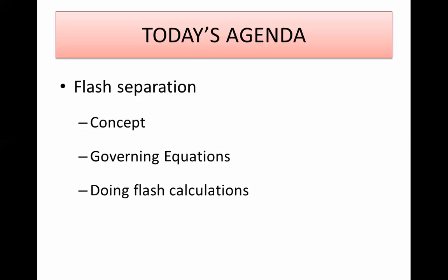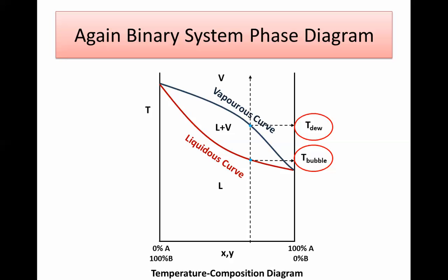Today we'll just discuss the concept and see how it works, and next time we'll see how to do this in Excel. So as we said last time, you have the liquid-vapor phase diagram — the temperature-composition phase diagram — with the vapor curve and the liquid curve. This is the dew point and this is the bubble point. The wet region highlighted in blue is the region of interest.